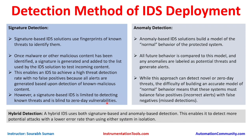However, signature-based IDS is limited to detecting known threats and is blind to zero-day vulnerabilities. A zero-day vulnerability is a malware, ransomware, or virus on the internet that has not been previously exploited or seen in the network. There is no known signature available for that malware, so it is called a zero-day attack. These are very costly and can be created with huge resources, compute capabilities, and technical skills.